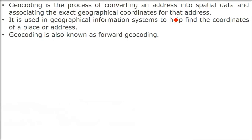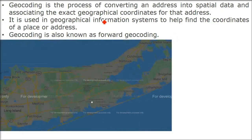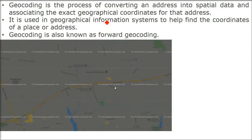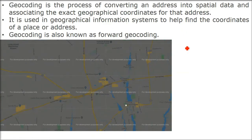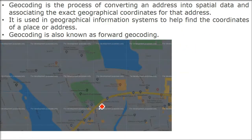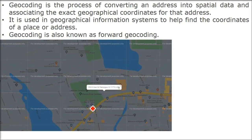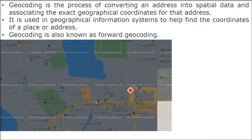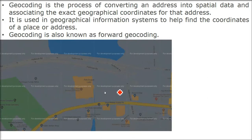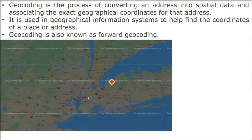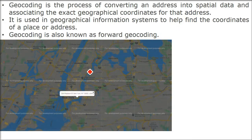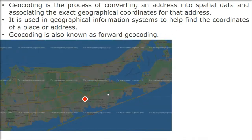Geocoding is the process of converting an address into spatial data and associating the exact geographical coordinates for that address. Basically, everything on Earth has a location — that is latitude and longitude. And the metadata or attribute is: at this location, whose house is this, or which office is there?